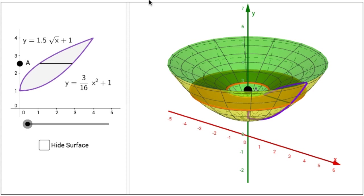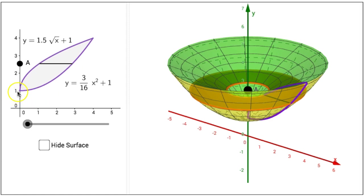On the left side of the interactive figure, we see a region in the xy plane bounded above by the graph of y equals 1.5 times the square root of x plus 1 and bounded below by the graph of y equals 3 sixteenths x squared plus 1, graphed between y equals 1 and y equals 4.